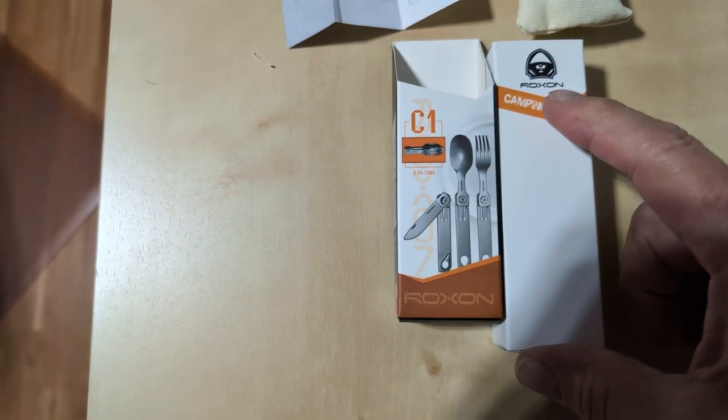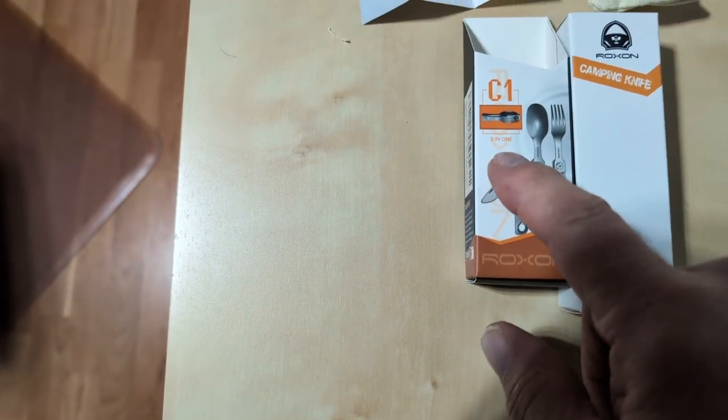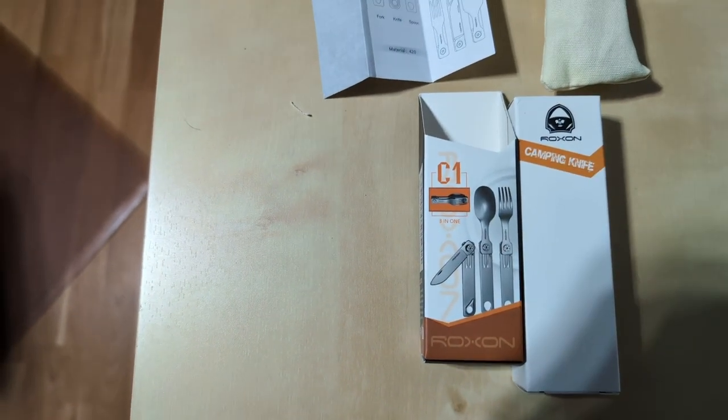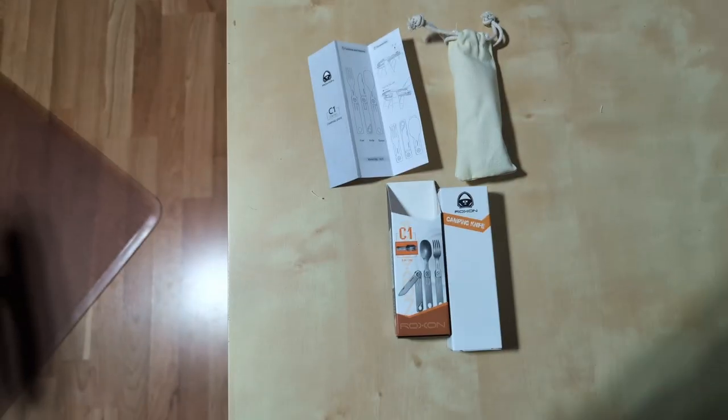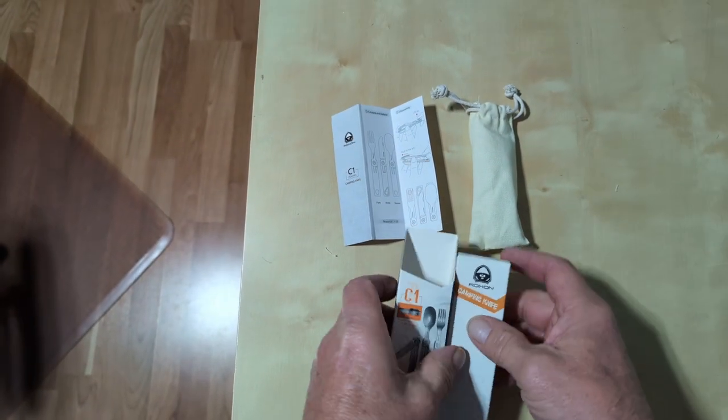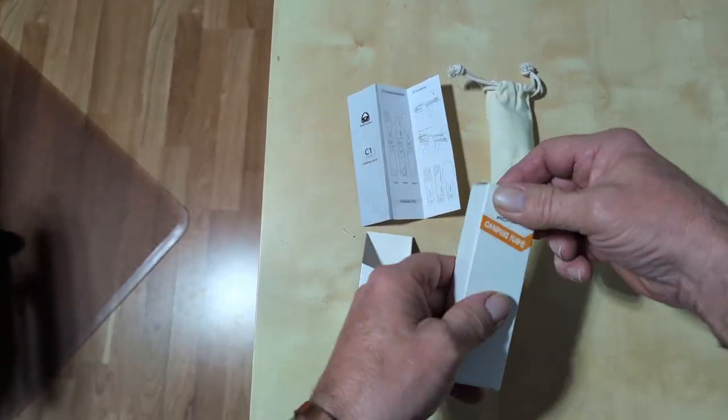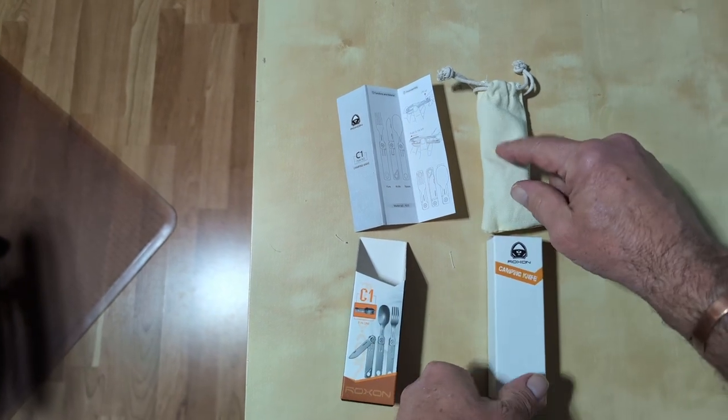Hey, it's Fuzzy. Today we're going to do a review on the Roxxon C1 three-in-one camping knife. This thing's awesome, man. Holy cow! Stainless steel. It comes in this box here. Pull that out, pull this out, pull that out.